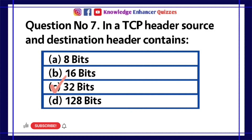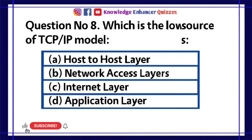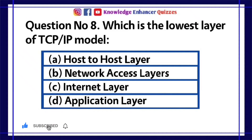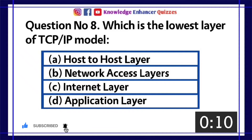Option C is the right answer. Question number 8: Which is the lowest layer of the TCP/IP model? A. Host-to-host layer. B. Network access layer. C. Internet layer. D. Application layer.